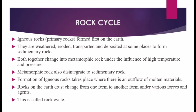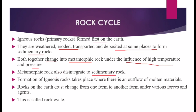Igneous rock is considered the primary or parent rock, formed first on the Earth. Igneous rocks were weathered, eroded, transported, and deposited to form sedimentary rocks. Both igneous and sedimentary rocks can change into metamorphic rock under the influence of high temperature and pressure. Metamorphic rocks can also disintegrate back into sedimentary rock. Formation of igneous rocks takes place where there is an outflow of molten material. Rocks on the Earth's crust change from one form to another under various forces and agents — this is called the rock cycle.